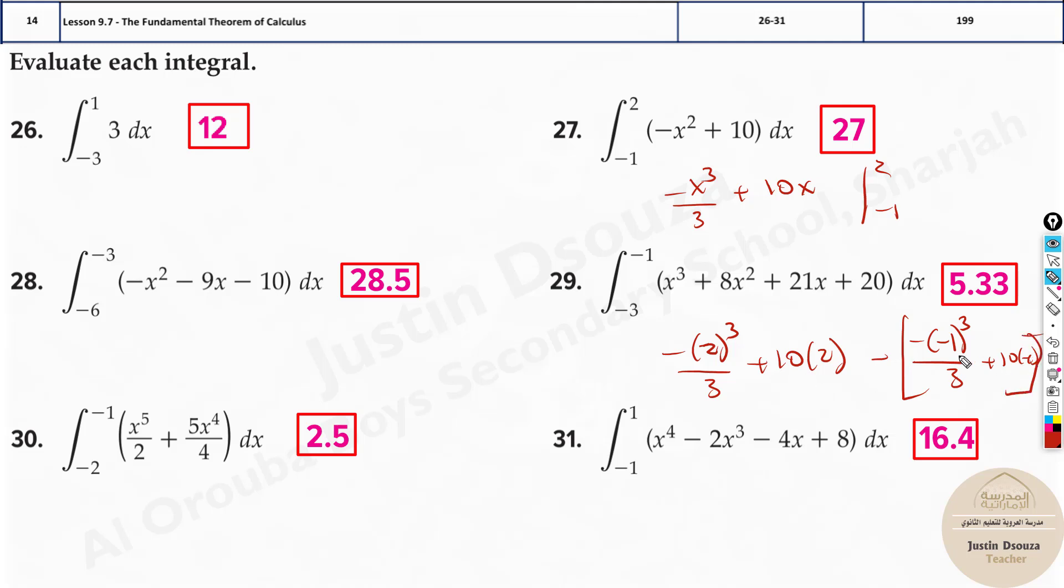Now we can put this in the calculator and solve, or you can just directly put it because it's MCQ part. But let's solve this up. It'll be 248 minus 8 by 3 plus 20 minus. Over here, the cube minus sign remains, minus minus will be plus.